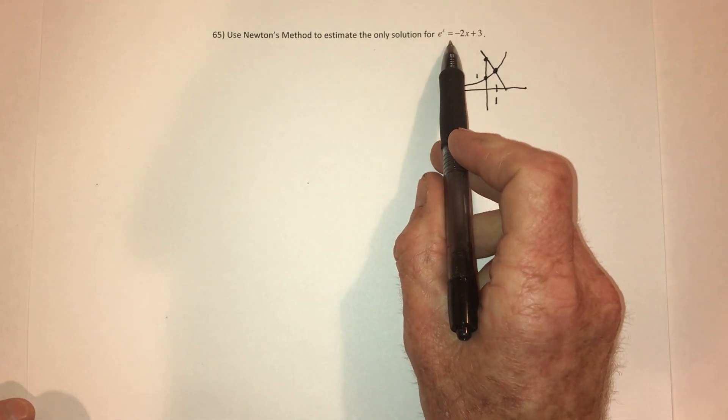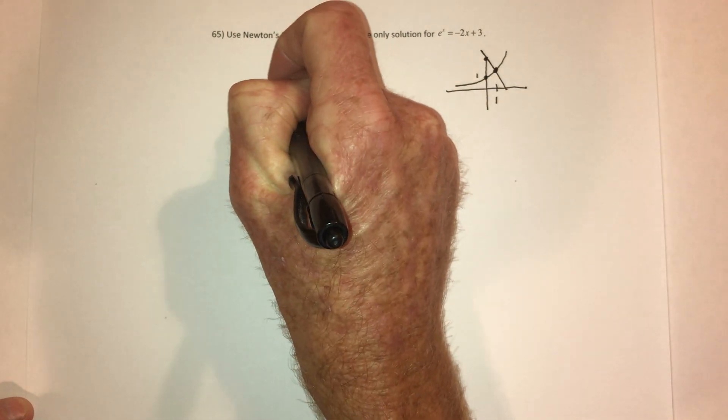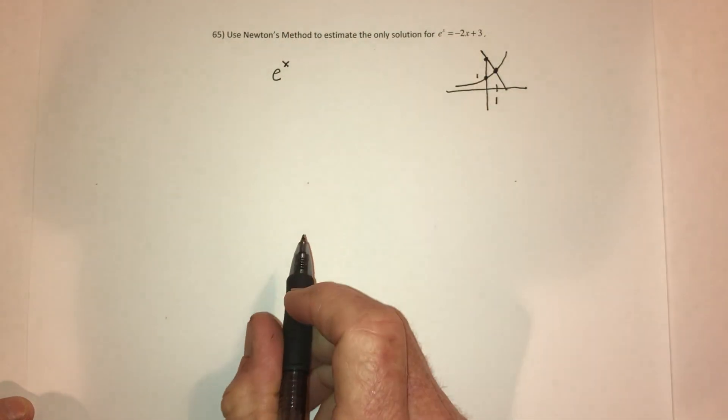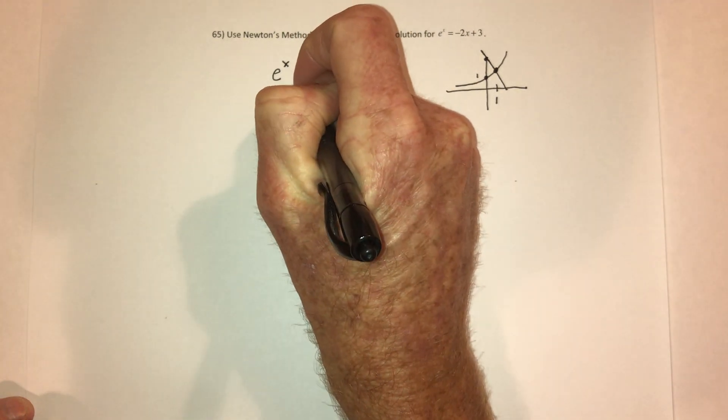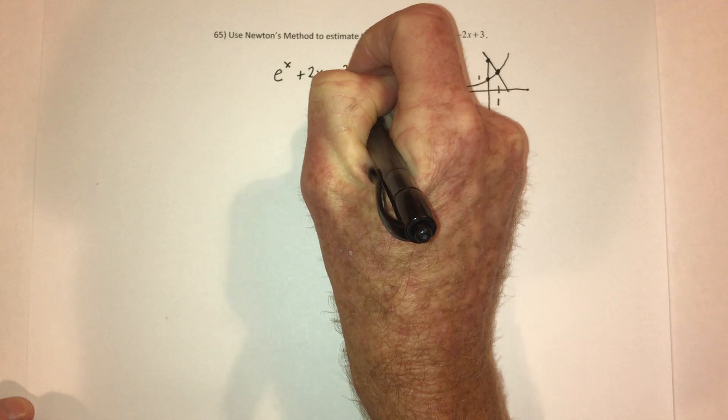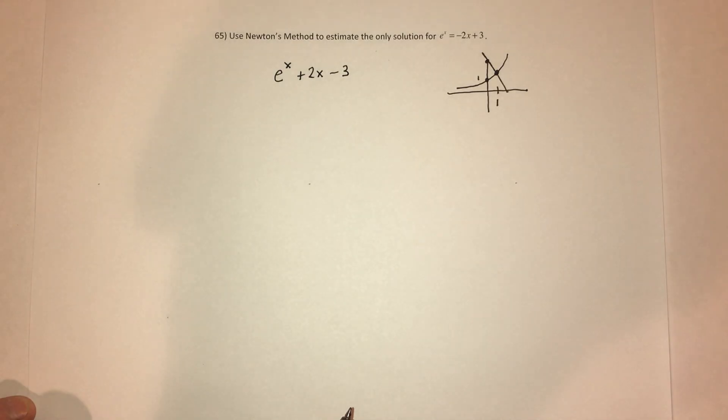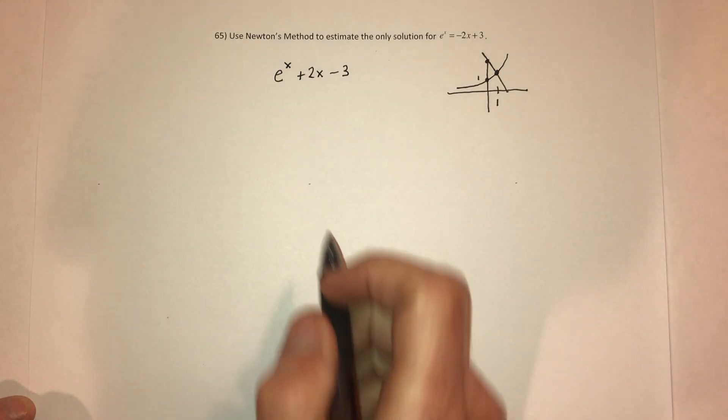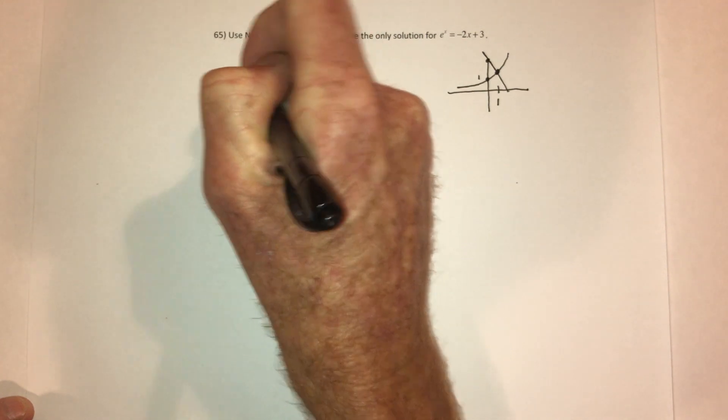The first thing I need to do is set it equal to 0. So I'll have e to the x stay on the left side, and then add 2x to both sides, subtract 3, and now it would be equal to 0. And then you call that your function, f of x.